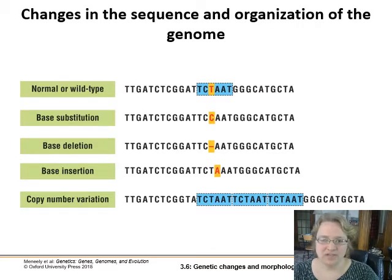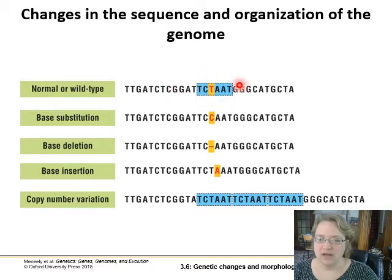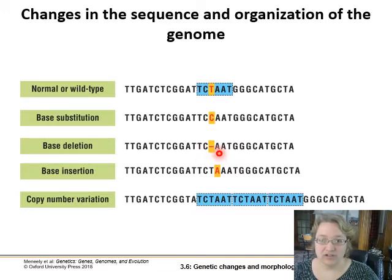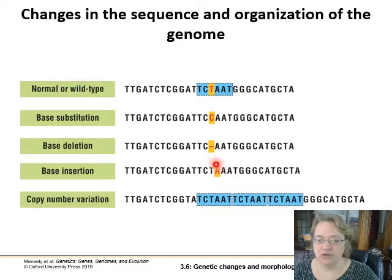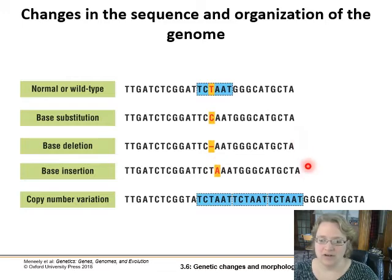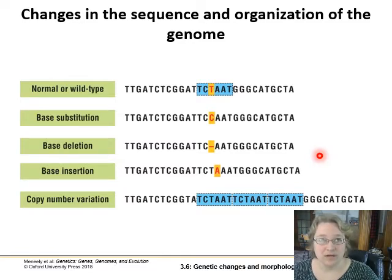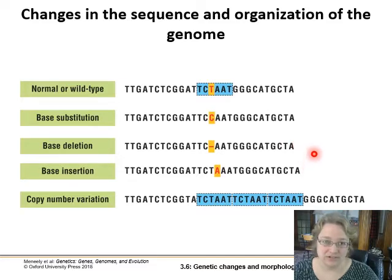We've got some basic types of changes in sequence and organization of the genome. On top we have our wild type sequence. What can happen is we can have a base substitution where one base is switched for a different one. We can remove a base, which is going to change the reading frame of the remainder of the sequence. We can insert a base or multiple, which is again going to change the reading frame, unless deletions or insertions are in multiples of three — then you get an amino acid residue added or removed without changing the reading frame.